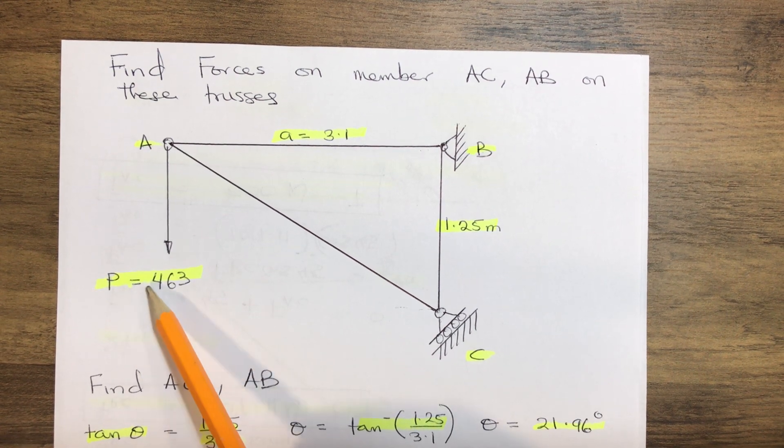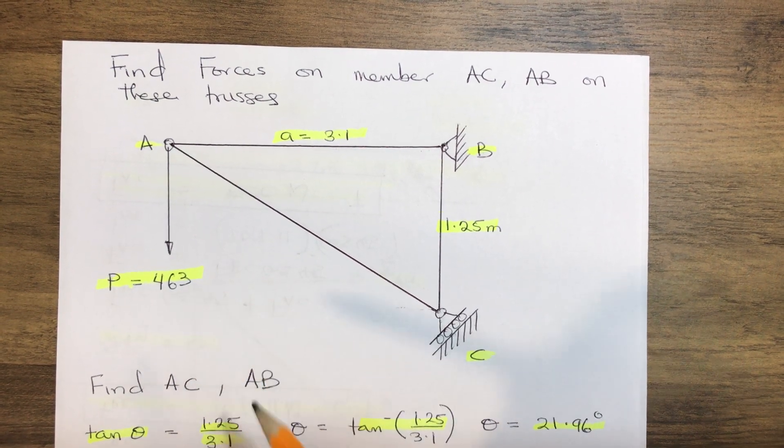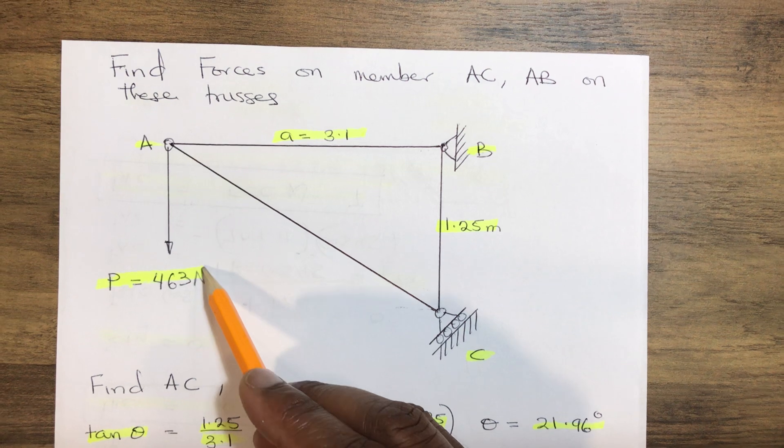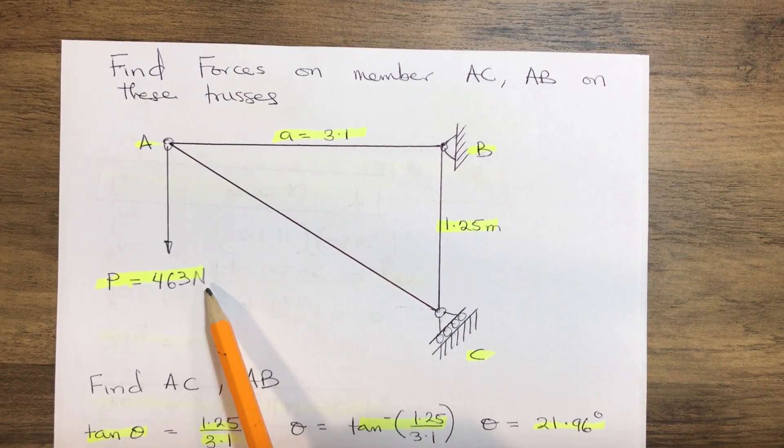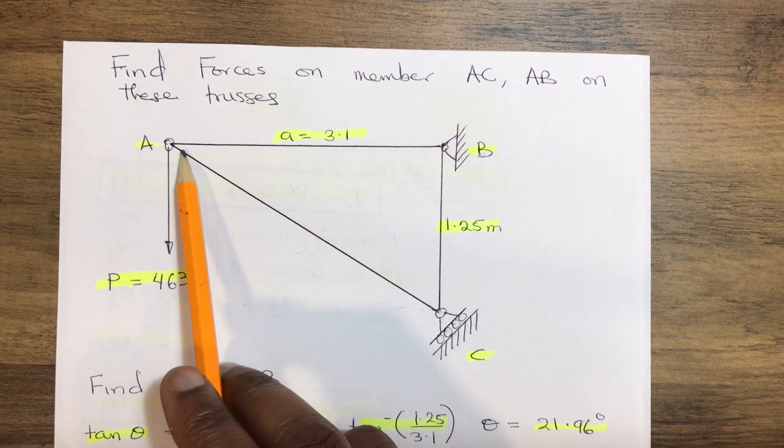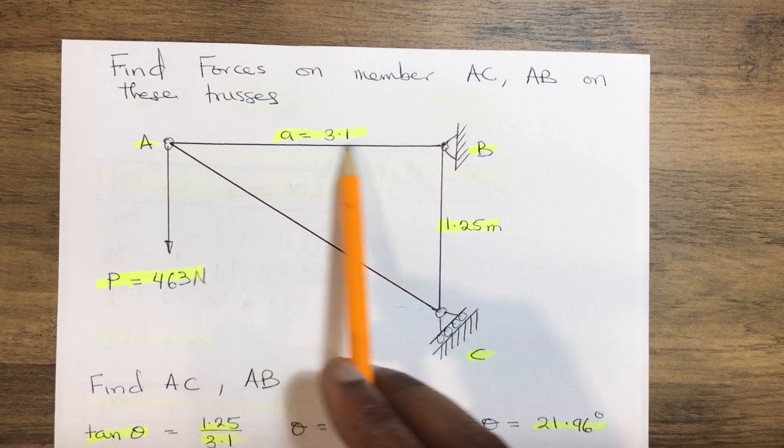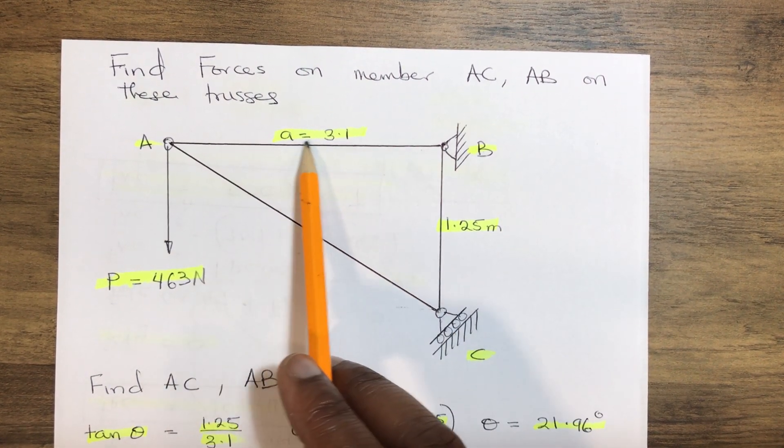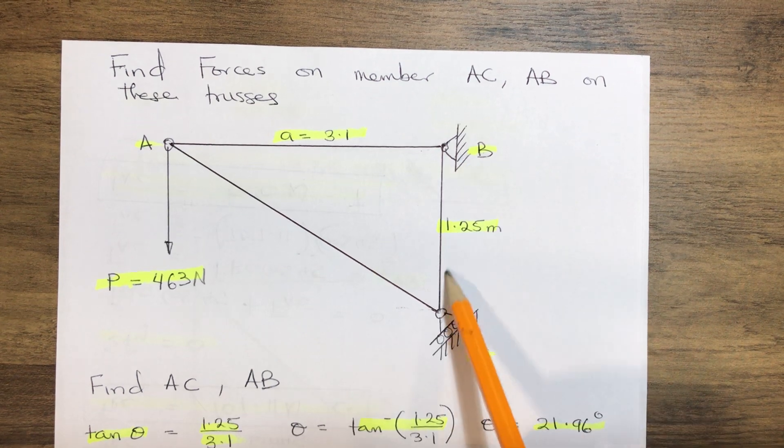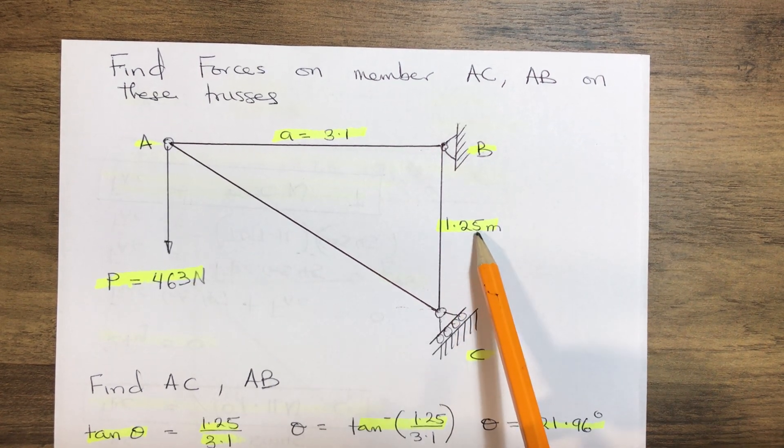With the quantity P which is 463 Newton, we have our horizontal distance of the member here which is 3.1 and our vertical distance here which is 1.25 meter.